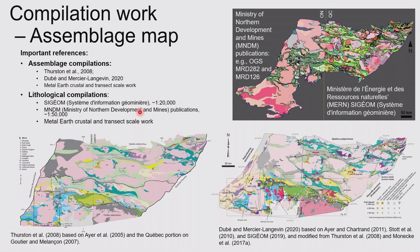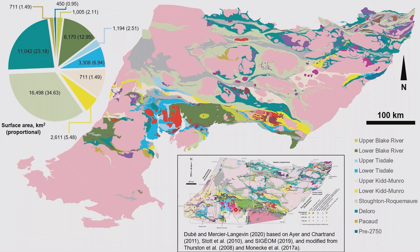All the line work is the foundation for the assemblage map, together with a lot of the great work that Phil and John have done through the years, and also more recently the compilation done by Dubé and Patrick. Those were very informative in terms of building our new assemblage map for the Abitibi, together with all the new geochronology and new mapping done by Metal Earth researchers, to constrain the assemblage as we think it should look. One example you can see is Swayze — in the more recent compilation, a lot of the Kidman Row down there, which Tom has managed to update through more geochronology.